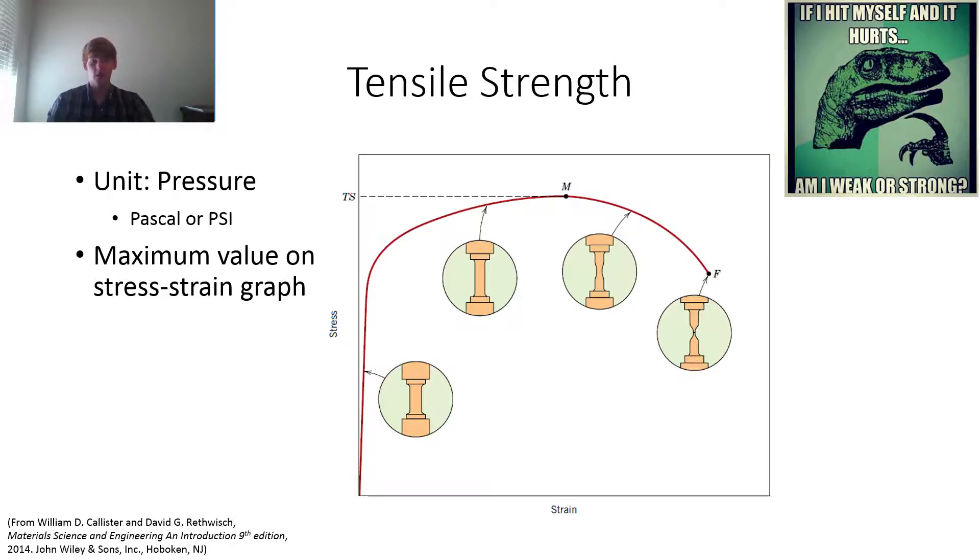So tensile strength is the maximum value on the stress-strain diagram or stress-strain graph. And at this point, anything to the right of it is where it begins to neck. And necking is pretty much a form of failure where at this point, instead of elongating or applying stress uniformly throughout the whole material, it begins to focus at a certain point within the material, which because it's being focused there, the cross-sectional area begins to shrink, which in turn causes the stress through that point to increase until failure, where it just completely snaps and breaks apart.